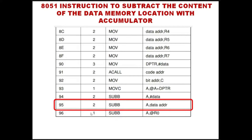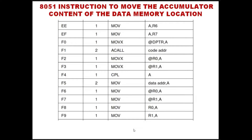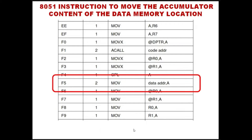For subtraction you must always use only the subtract with borrow instruction. The instruction to subtract the content of the data location from the accumulator is SUBB A, data_address — a 2-byte instruction with opcode 95 — which subtracts the content of memory location 21 from the accumulator and stores the difference in the accumulator. Finally, we move the result from the accumulator to data memory location 22 using MOV data_address, A — opcode F5 — so MOV 22H, A is our instruction.